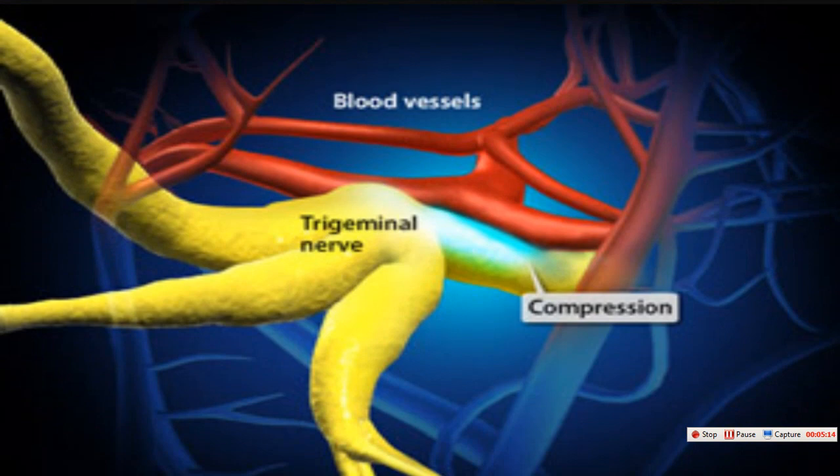As seen in the picture, microvascular abnormality — a vessel compressing the nerve — causes this shooting, electrical-like pain.